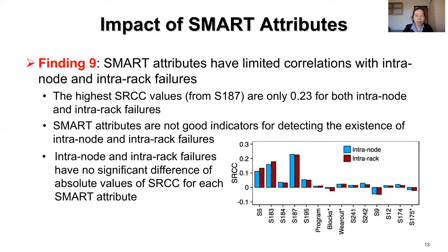We use the SRCC to examine which SMART attributes are correlated with intranode and intrarack failures. The figure shows that SMART attributes have limited correlations with intranode and intrarack failures — the highest SRCC values are only 0.23 for both. Thus, SMART attributes are not good indicators for detecting intranode and intrarack failures. Also, intranode and intrarack failures show no significant difference in absolute SRCC values for each SMART attribute.